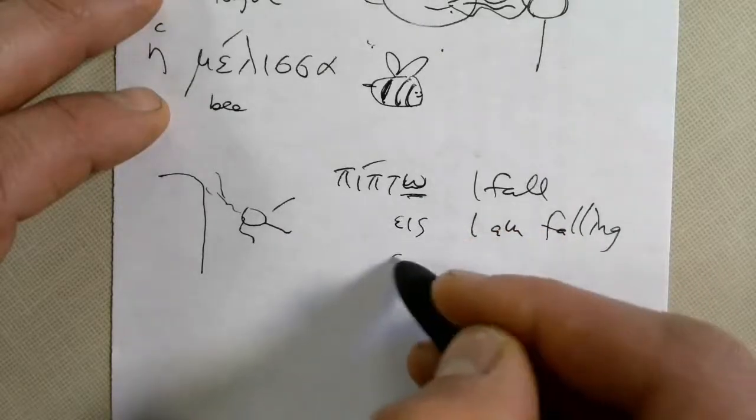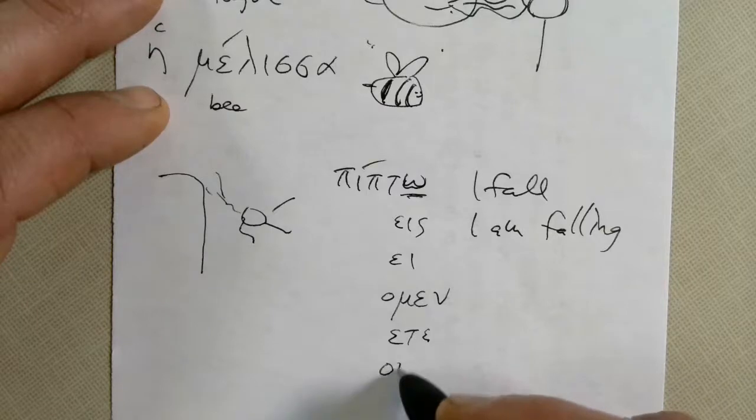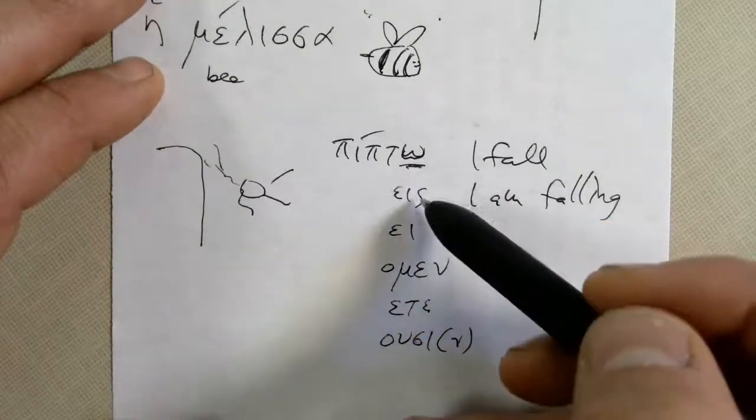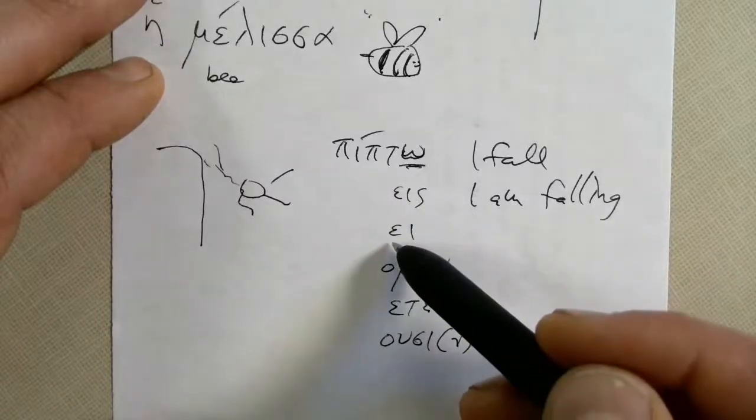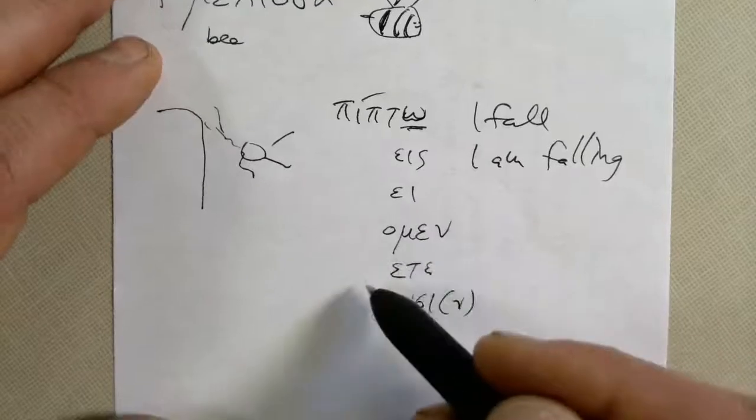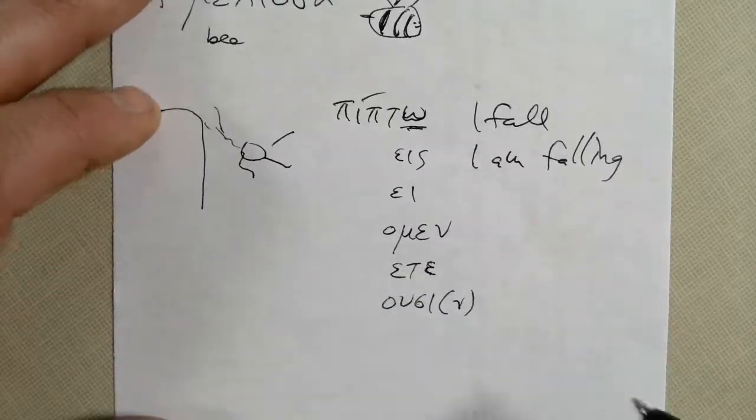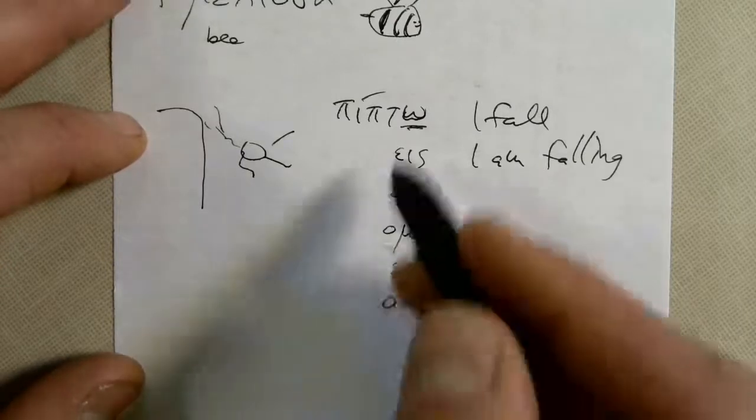Oh, isi, homen, ette, usin. Notice peepto I fall, peeptis I am falling, pepti he or she or it is falling, peeptomenn we fall, peeptete y'all are falling and pipto sin they are falling.